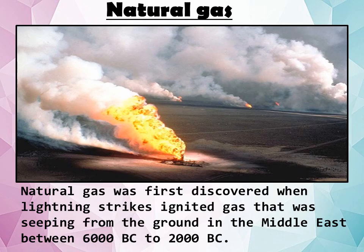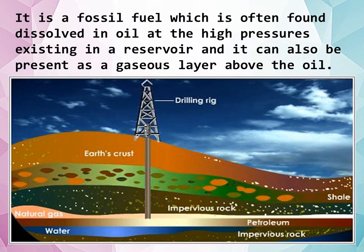Natural gas was first discovered when lightning strikes ignited gas that was seeping from the ground in the Middle East between 6000 to 2000 BC. Natural gas is a fossil fuel, which is often found dissolved in oil at high pressures existing in a reservoir, or it can also be present as a gaseous layer above the oil. The image here shows the occurrence of natural gas as a layer above crude oil deep within the earth.